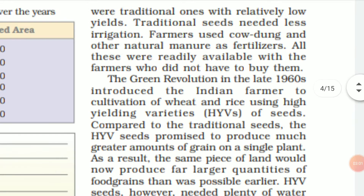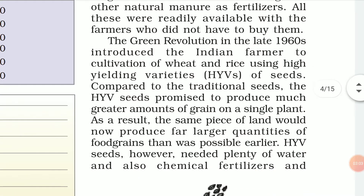The Green Revolution in the late 1960s introduced Indian farmers to the cultivation of wheat and rice using high yielding variety of seeds. Compared to traditional seeds, HYV seeds promised to produce a much greater amount of grains on a single plant, so the same piece of land could now produce far larger quantities of food grains.